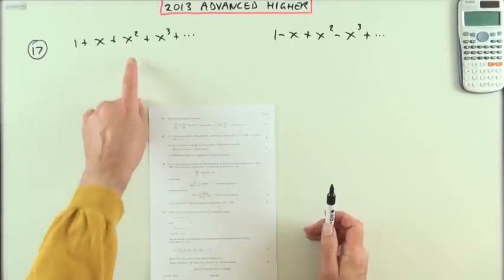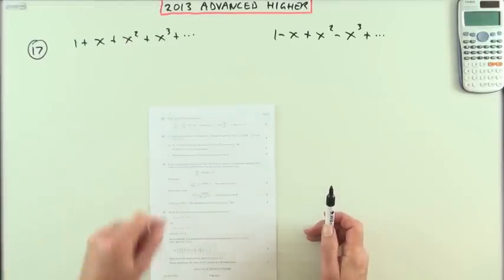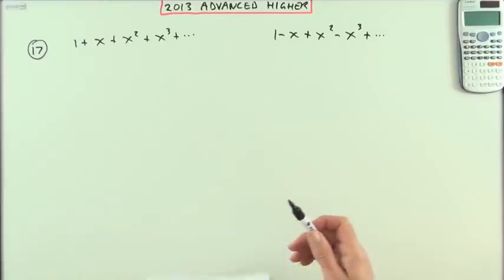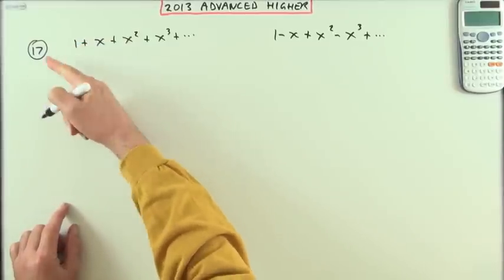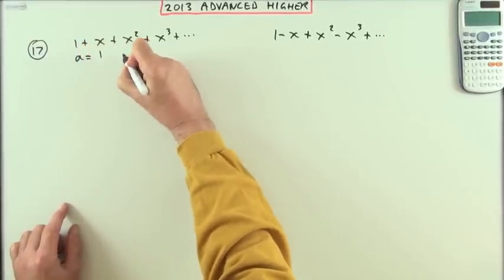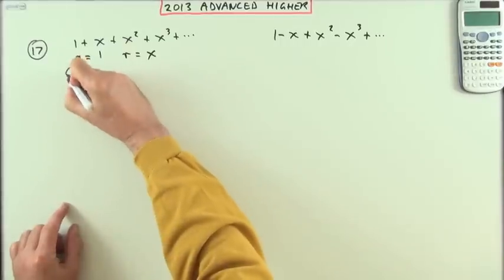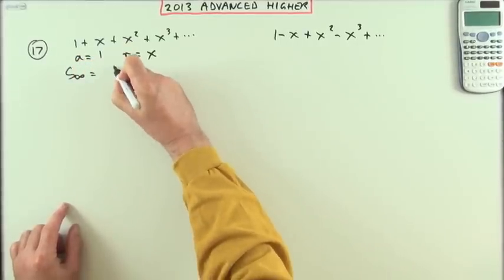For the first part, look at these two infinite series where x is a proper fraction less than one. Write down the sums to infinity of both. That's straightforward—identify the parts. The first term is one and the common ratio is x, so the sum to infinity is 1/(1-x).